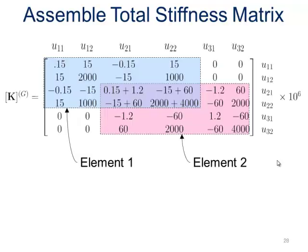Next we'll assemble the total global stiffness matrix. Node 1 and node 2 make up element 1 — shown in blue. Node 2 and node 3 make up element 2. There's a crossover at node 2, hence the purple where blue and red overlap. Those terms will add up at that shared node.